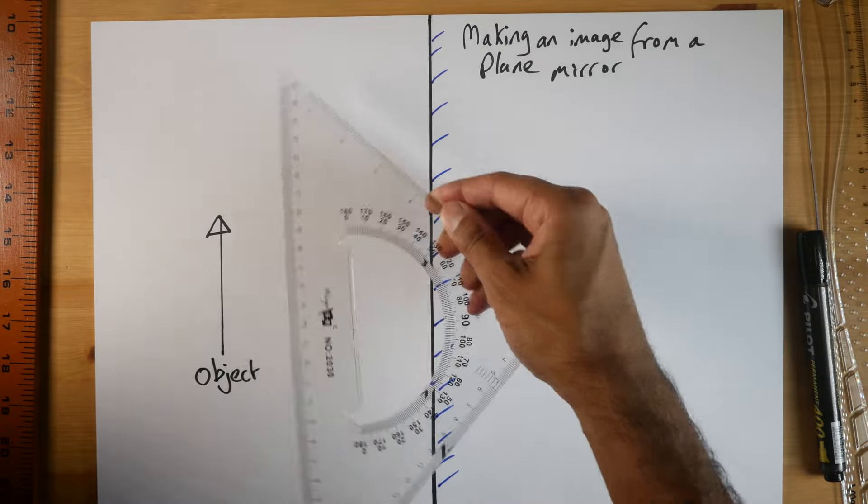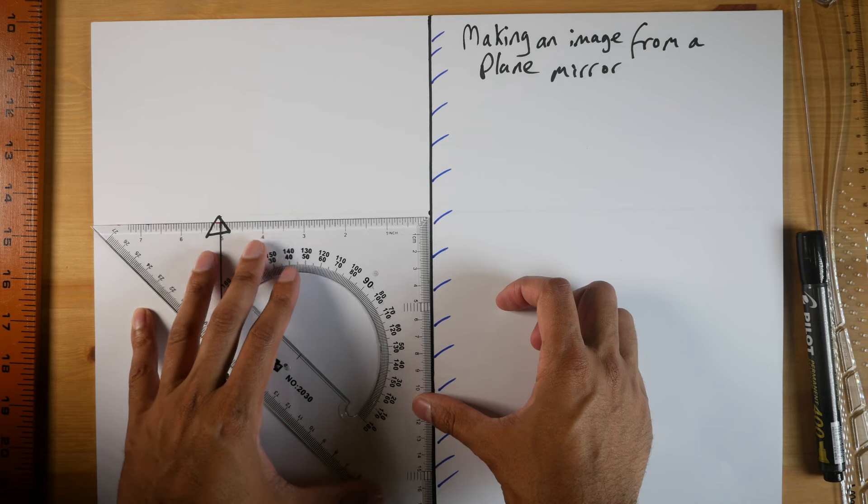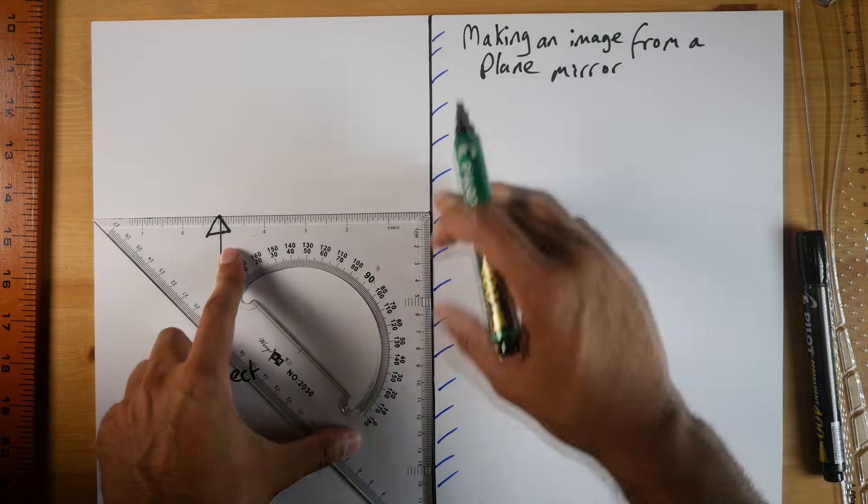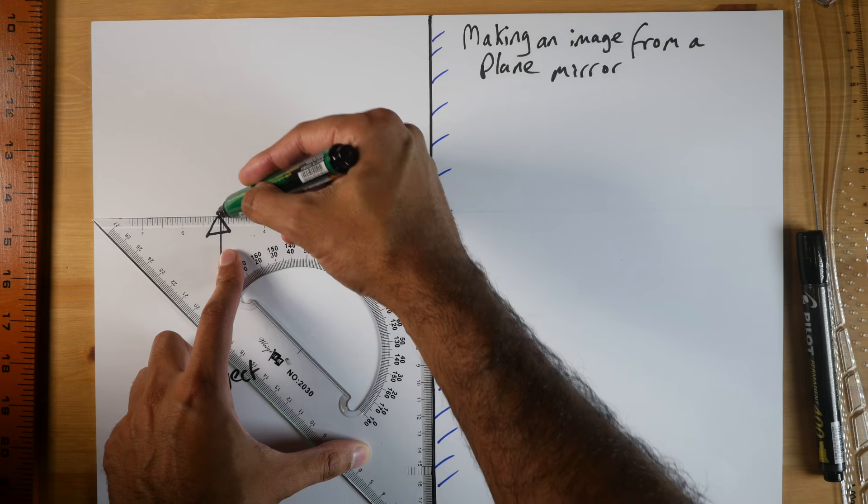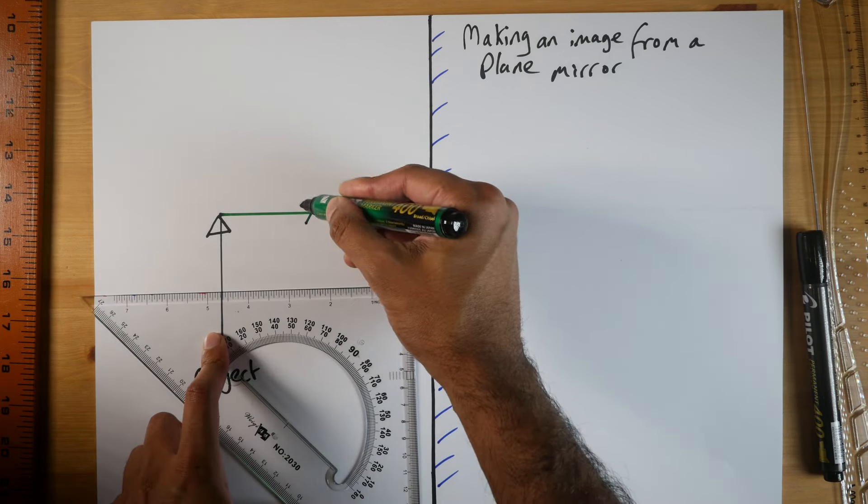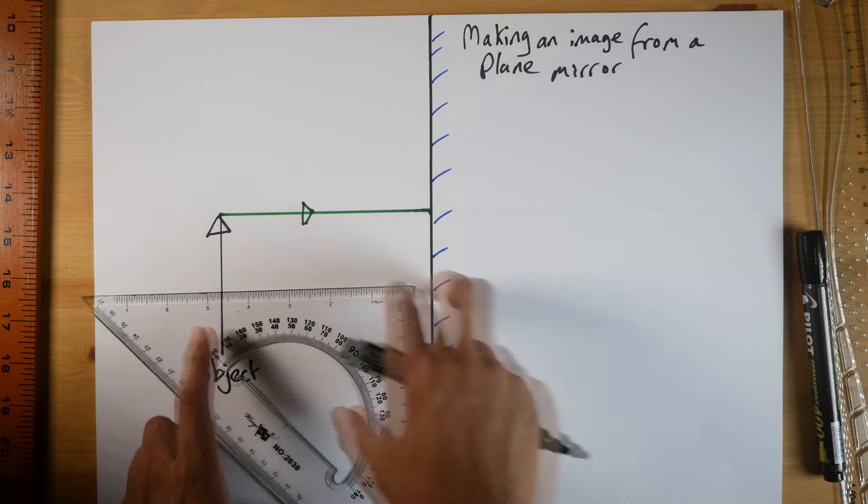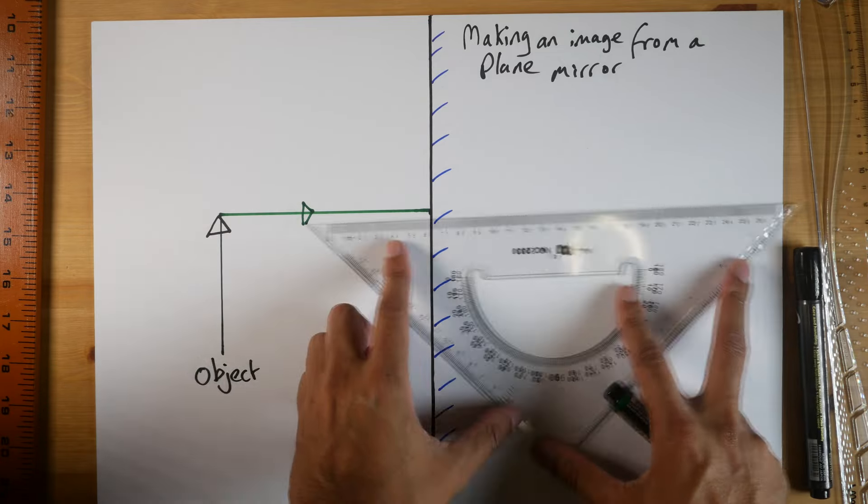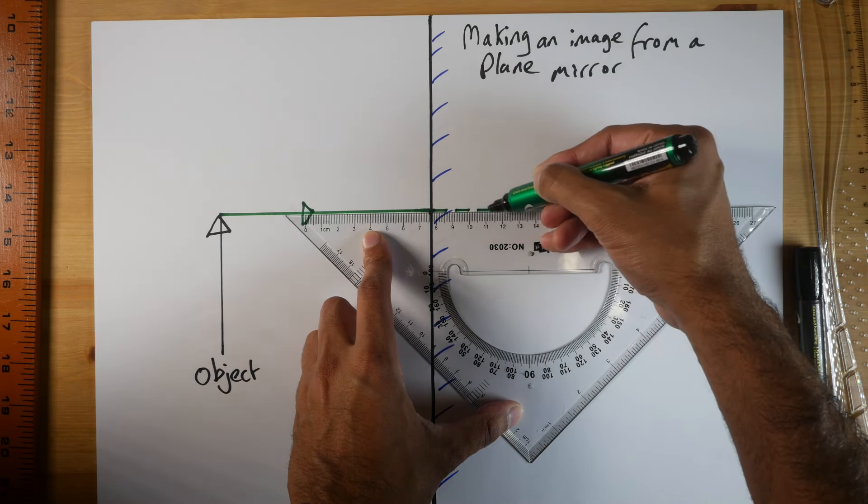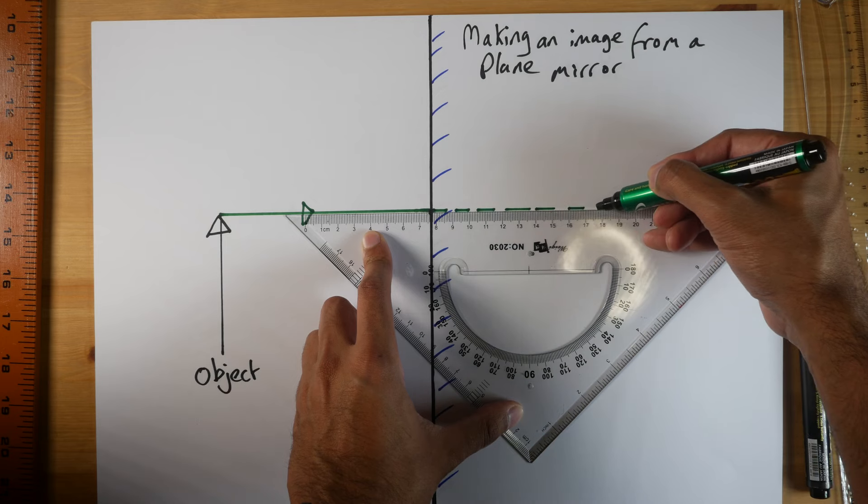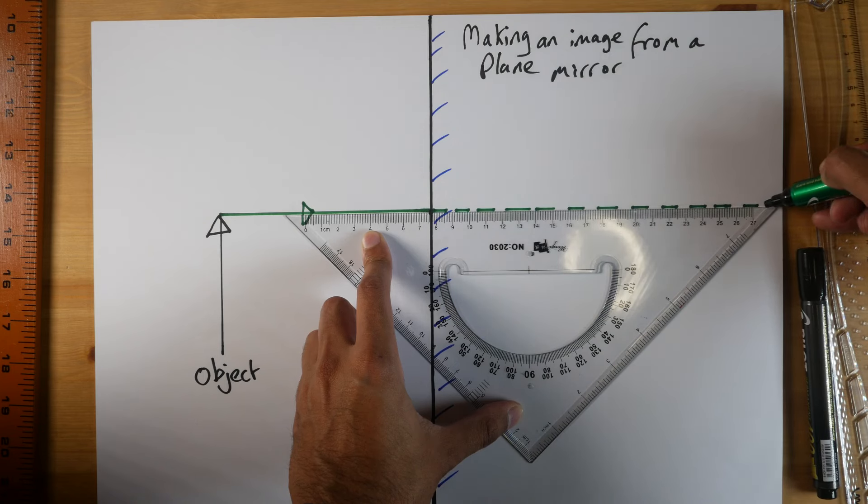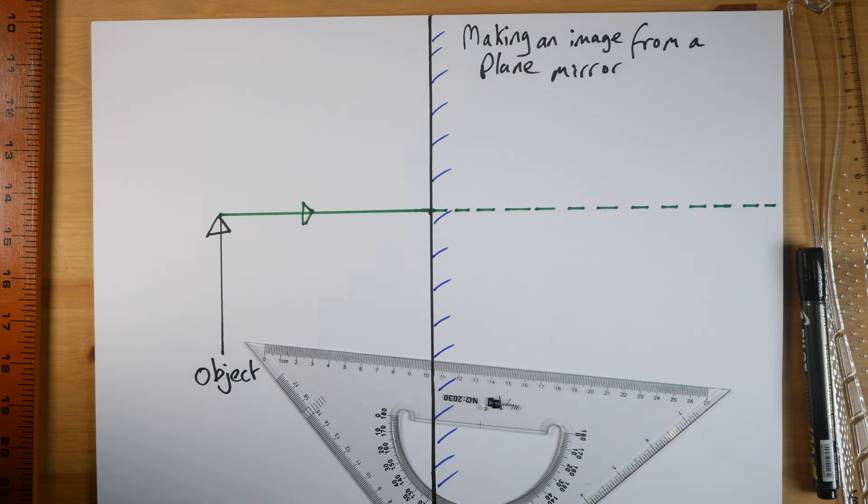So I'm using a set square. It's very useful because you can put it right up against the mirror and you get a perfect 90 degree line. And I'm going to use a green pen. So this is my first incident ray coming from the top of the arrow. Now normally bounce back, but I'm going to extend it along here. And I'm going to make this a dotted line. These light rays, this one behind the mirror, it doesn't actually exist. I'm going to give it a dotted line like that. That's our first light ray.